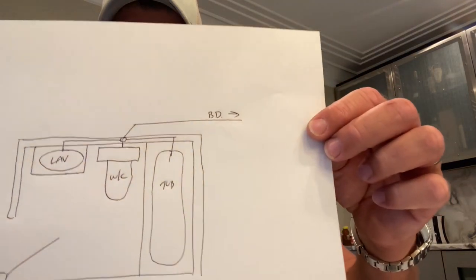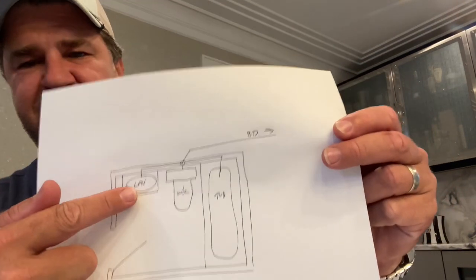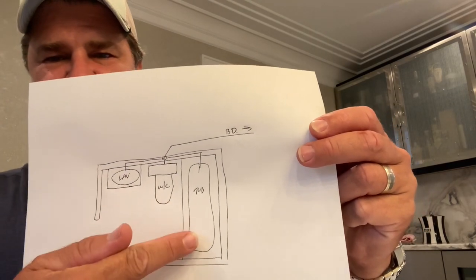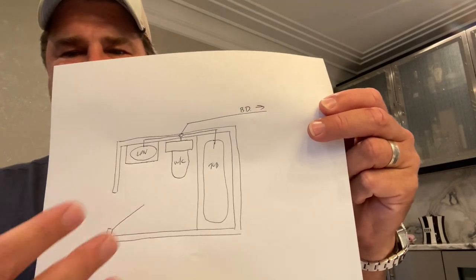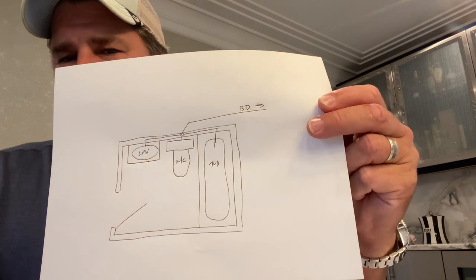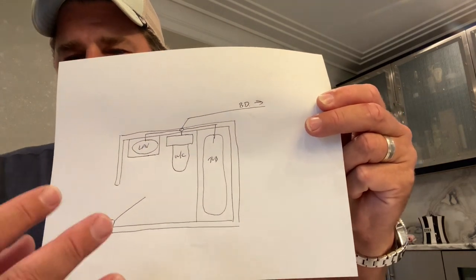But nonetheless, I want to focus on how to take something like this, a three-piece bathroom. We have a lav, we have a water closet, and we have a tub. Typical three-piece bathroom, right?